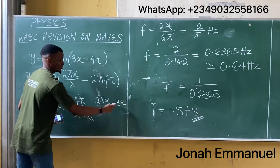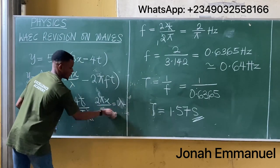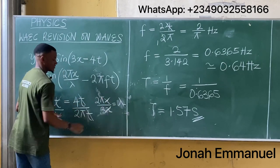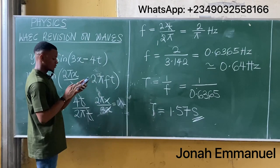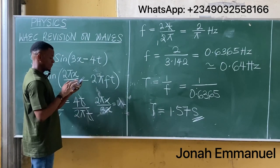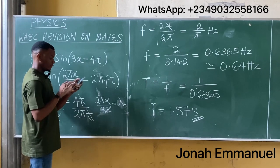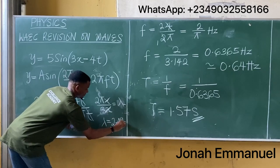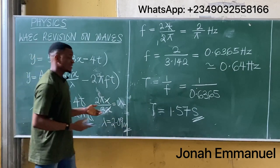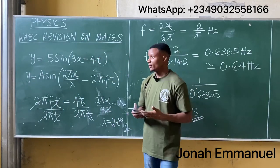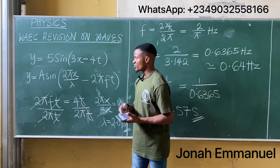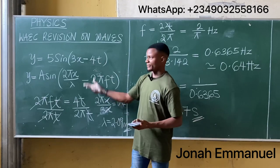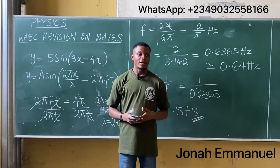The amplitude A = 5. For wavelength, equating the x-terms: 2πx/λ = 3x, so λ = 2π/3 ≈ 2.09 cm. This is how we solve problems involving the wave equation. Always recall the correct formula and compare values.